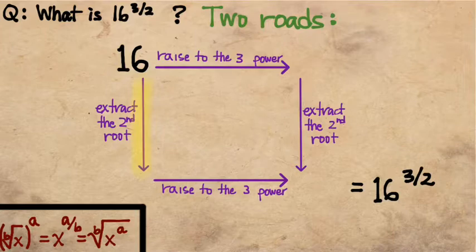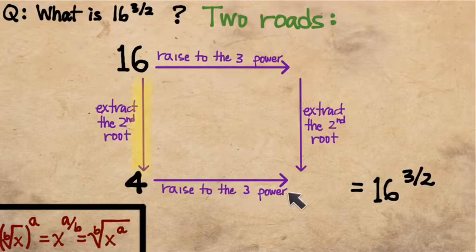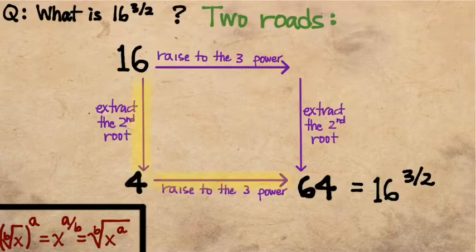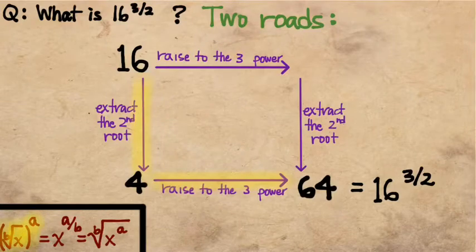And then our job is going to be to take that 4 and raise it to the third power, so 4 times 4 times 4. And that's where you got your 64 from. So that's the road that we walk down if we saw this side of the equal sign in this equality. In this expression down here, we're first extracting the root inside these parentheses, and then we're raising the results to the power that's given by the numerator.